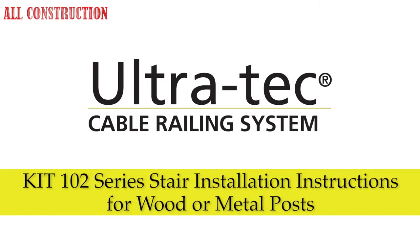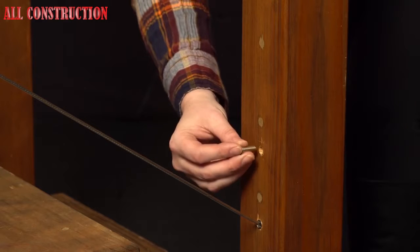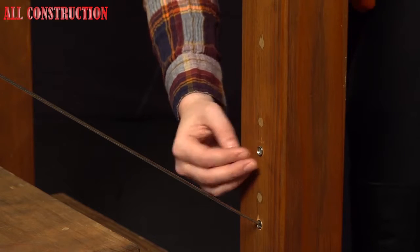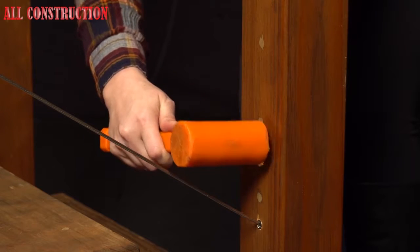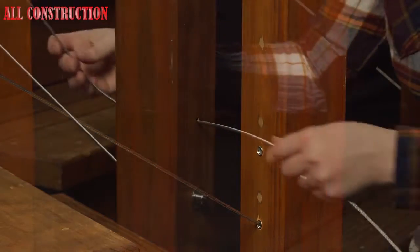Installation instructions for wood or metal posts. Install tensioning terminal. If a wood post, insert the post protector tube first into the face of both end posts. Force each tube into post so it's flush with post face.